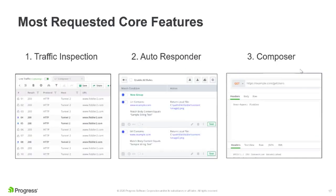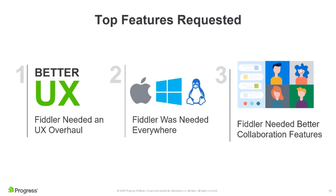In our interviews, the most requested core features were traffic capture and inspection, followed by autoresponder and composer support. Apart from that, we also got requests to make Fiddler more intuitive by improving the layout and user experience, to support other platforms like Mac and Linux, and our users also requested collaboration features to make it easy to work with teammates.